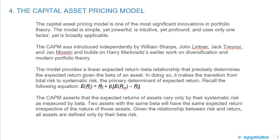The Capital Asset Pricing Model is one of the most significant innovations in portfolio theory. The model is simple yet powerful, intuitive yet profound, and uses only one factor yet is broadly applicable. The CAPM was introduced independently by William Sharpe, John Lintner, Jack Treynor, and Jan Mossin, and builds on Harry Markowitz's earlier work on diversification and modern portfolio theory.